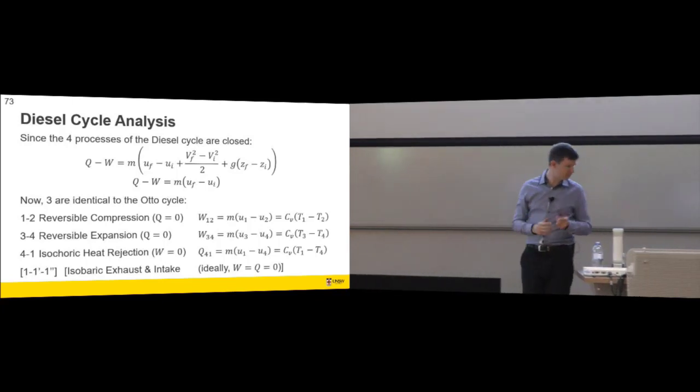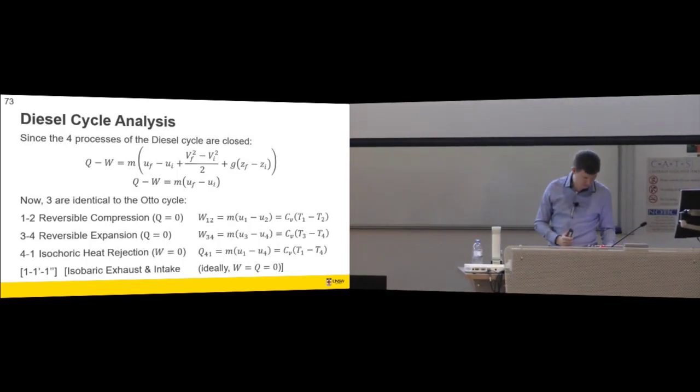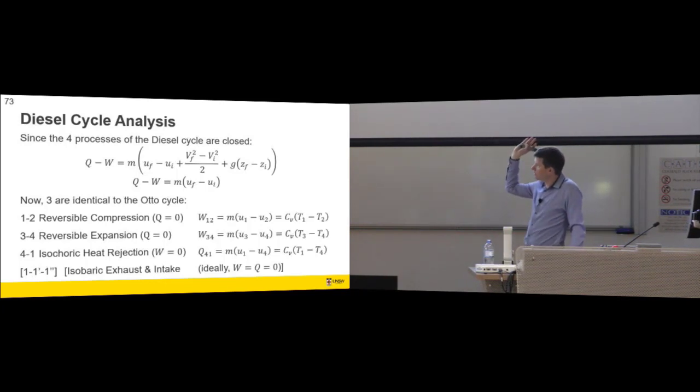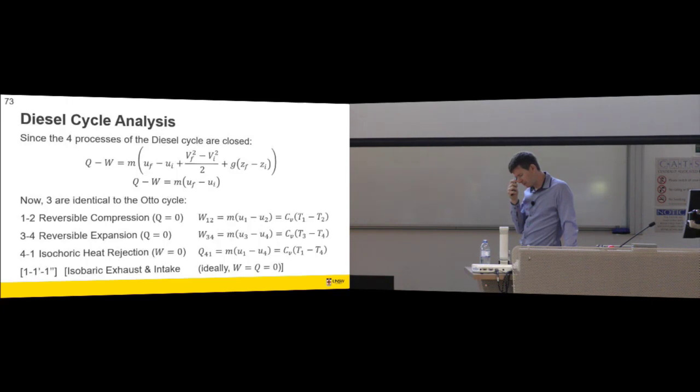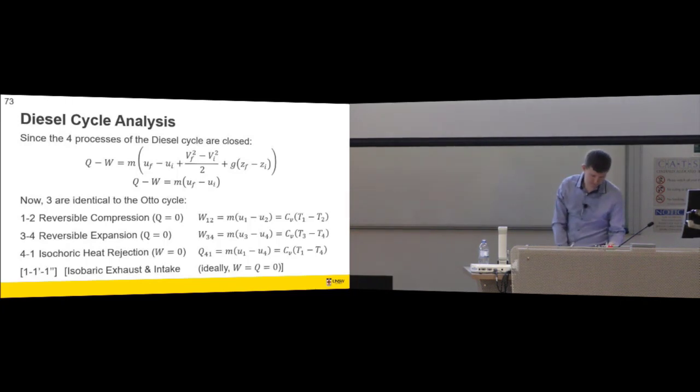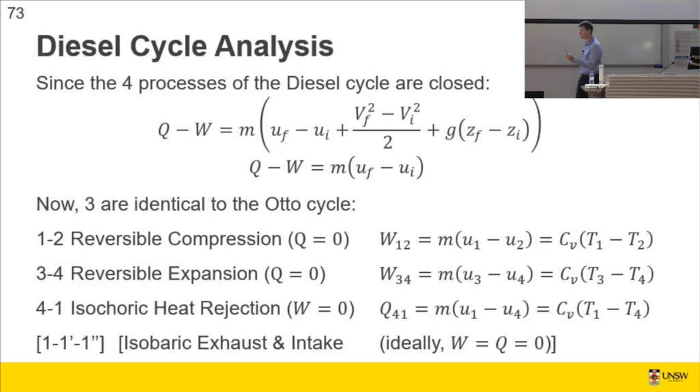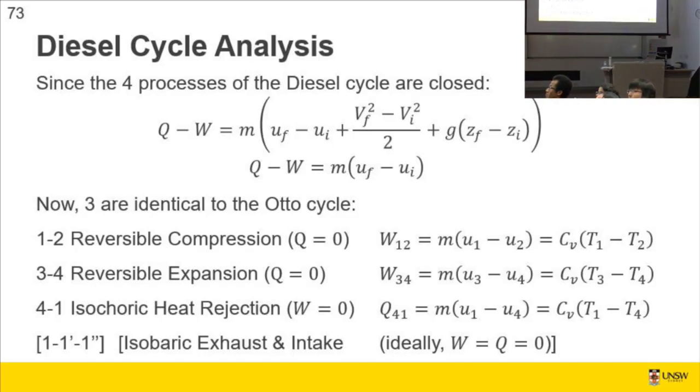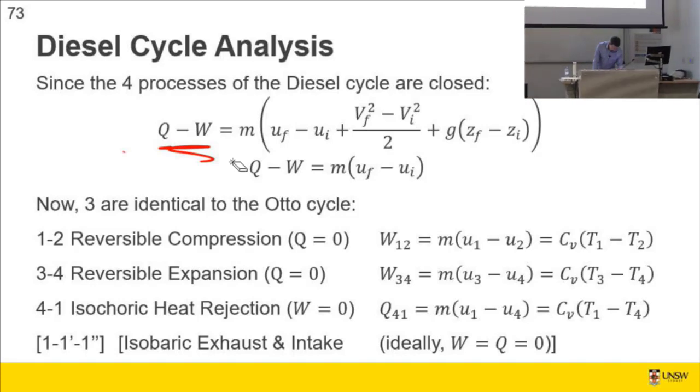So, using our first law for a thermodynamic process for a closed system, we've got Q minus W equals M times some things. One of the tutors was talking to me, and basically they said that some of the students in their class are simplifying the first law of thermodynamics incorrectly for the situation they're dealing with. So it's worth knowing.